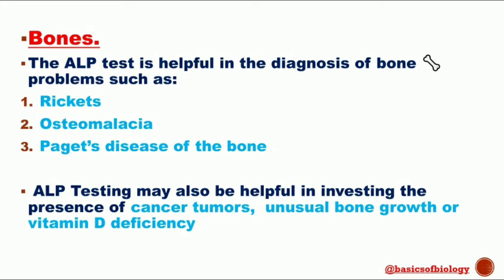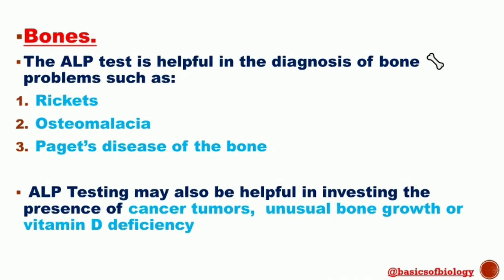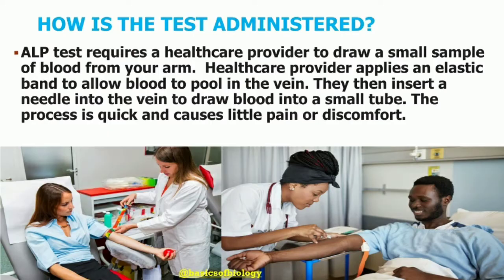Alkaline phosphatase testing may also be helpful in investigating the presence of cancer tumors, unusual bone growth, or vitamin D deficiency. It can also be used to check the progress of treatment for any of the above conditions.